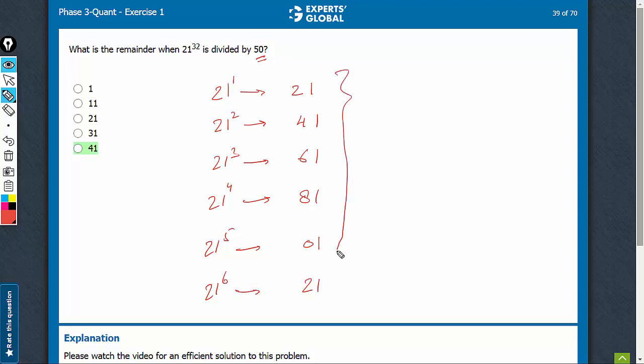So, this series of 5, 21, 41, 61, 81, 01, will continue for every 5 consecutive powers.